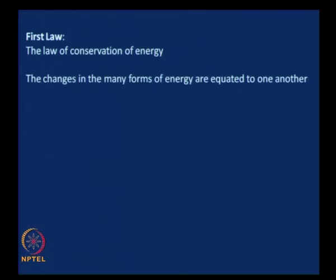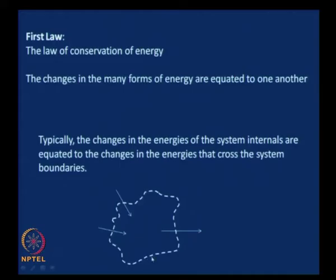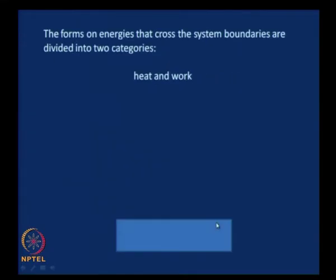The changes in many forms of energy are essentially equated to one another in the first law. Typically, the changes in the energies of the system internals are equated to the changes in energies that cross the system boundaries. This is the system indicated by the dotted line here. The energies that cross the system boundaries come in and go out. There are two categories of energies that cross the system boundaries: heat and work.